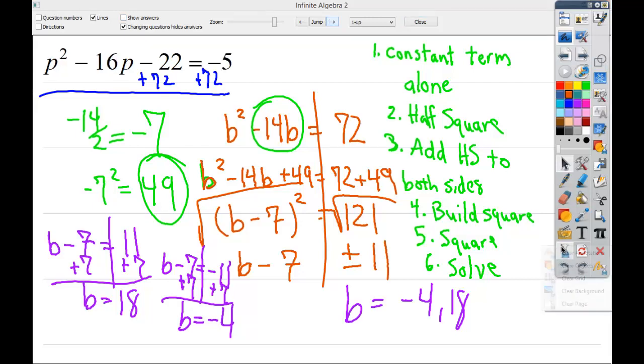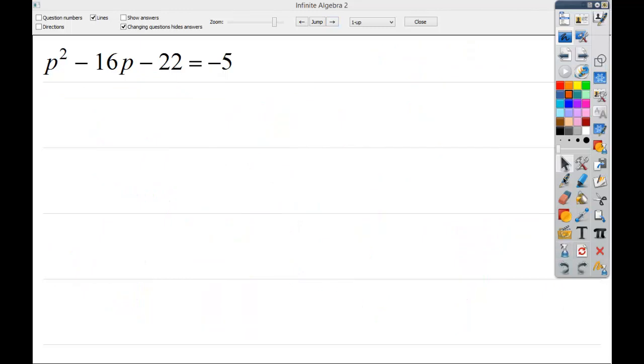So let's look at another one, one that's even more complicated than that one. So in this one, it's not hard, it's just a little bit different. Now it already has a little bit of a constant term on the other side, but the number one rule is all the constant terms need to be alone. So I need to get rid of this and do plus 22. And then I do 22, or negative 5 plus 22, which is 17.